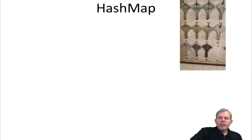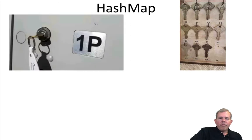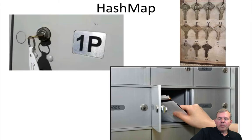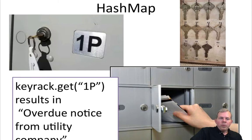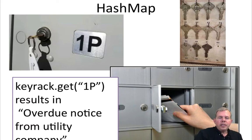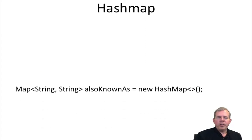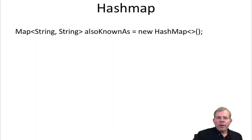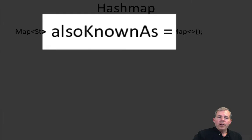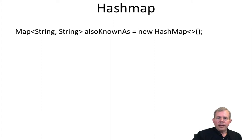A hash map is a little bit more complicated. I'd like to use the analogy of a key rack — every key on the rack has a specific number, every key opens a specific mailbox, and inside the mailbox you have the contents of the mail. In programming, you might have an object called key rack which is a hash map. For example, the item inside mailbox 1P might be a letter from the utility company. A hash map example here would be: let's create a hash map of a list of people, and we'll call it 'also known as.' You can see it's a map that inherits from an implementation of an interface called hash map.